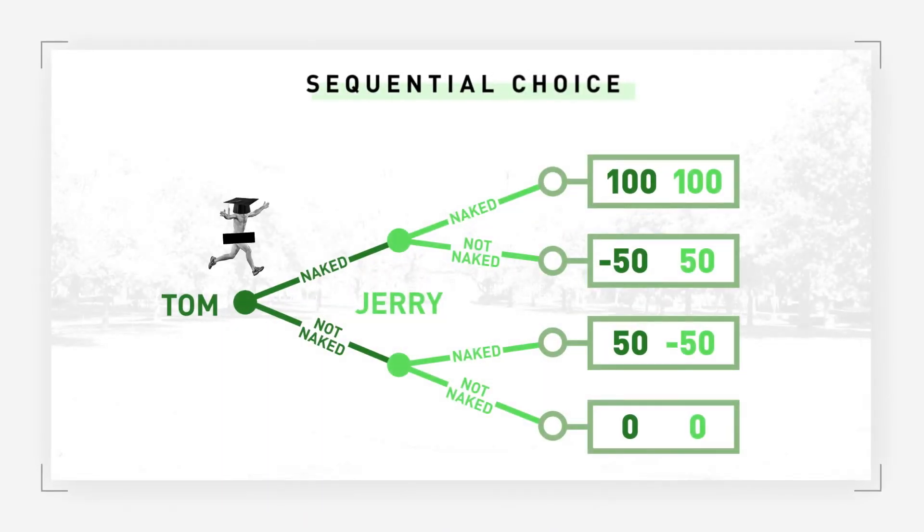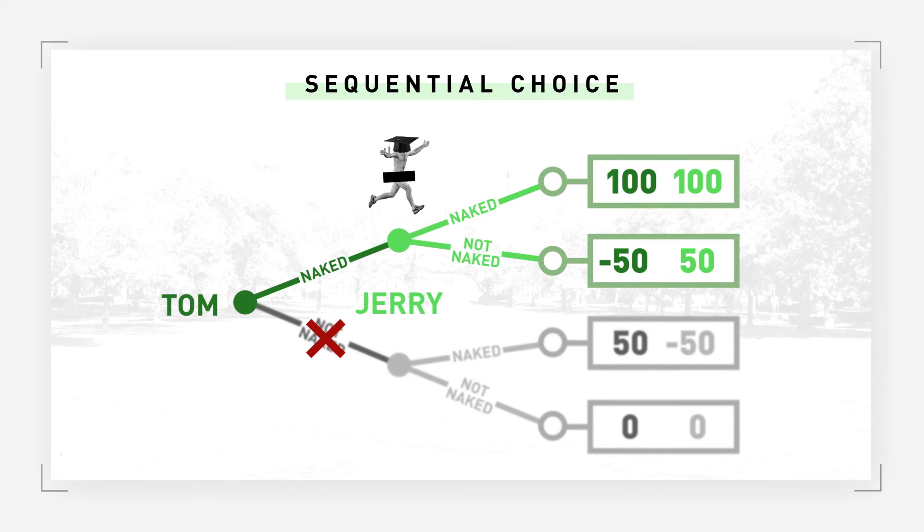In a game of sequential choice, on the other hand, the second player will do whatever the first player does. This is because if an outcome is best for both of us, and the only thing preventing us from achieving it is uncertainty about each other's motivations or commitment, once one of us sees the first person make a move for the preferred outcome, the other follows suit. In this case, if Tom runs naked, Jerry sheds his clothes too, and they both get 100 points.